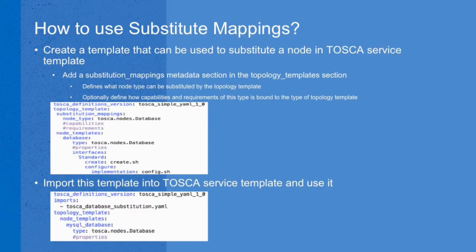How do you use Substitution Mapping? We have a database template where you define a Substitution Mapping and give it a name — in this example, tosca.nodes.database. You implement the database details there. Then in the next template you import tosca.nodes.database, declaring a MySQL database node of type tosca.nodes.database. Instead of rewriting all the details, you simply import it. That is the Substitution Mapping support.